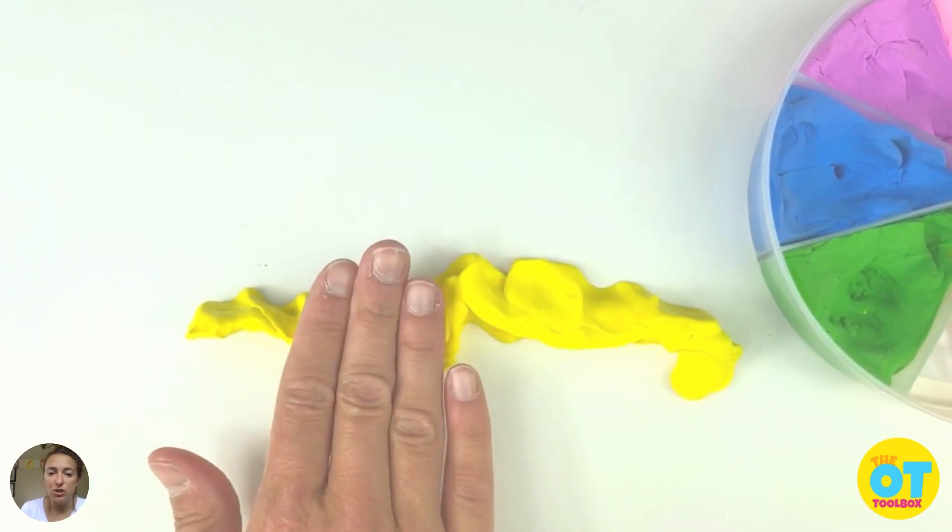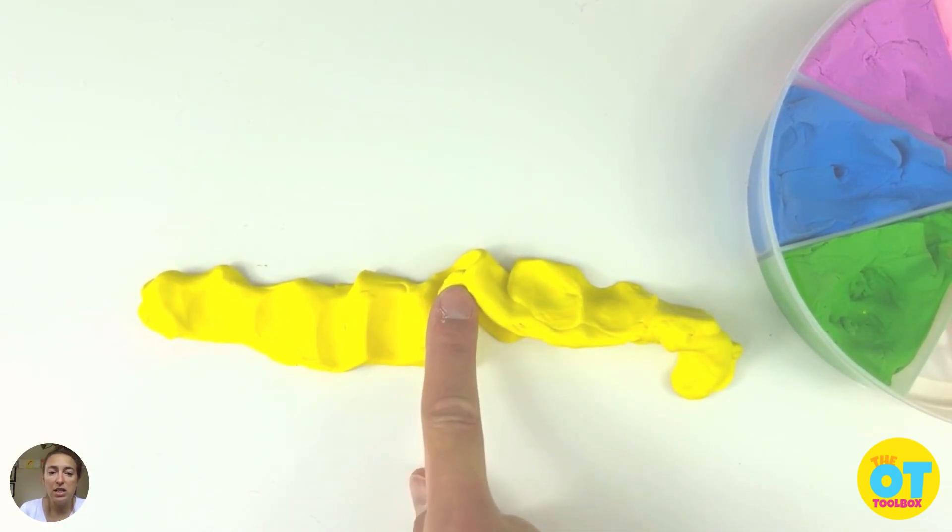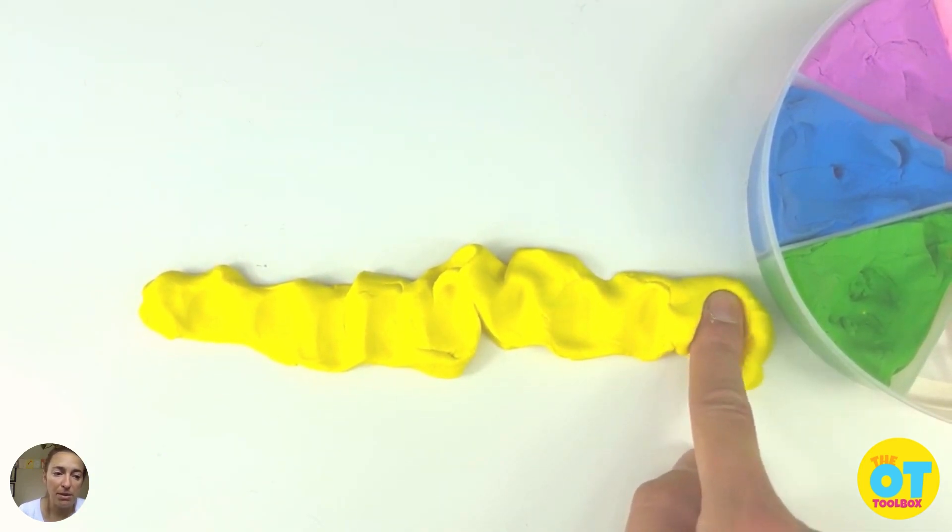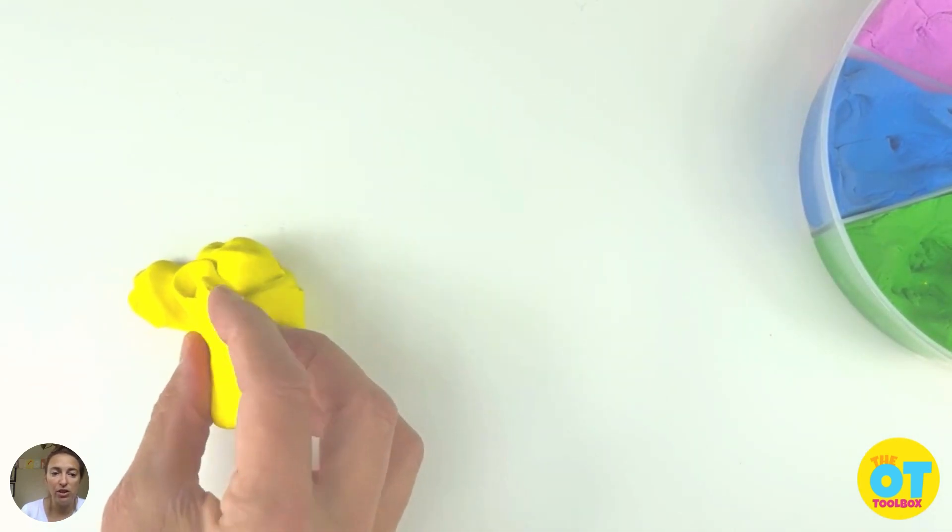Next, you're going to squeeze it together and make a nice long thread. Press one finger into the dough along the length of it. This is finger isolation happening here. You can also use any finger, you can work on pointer finger or any.